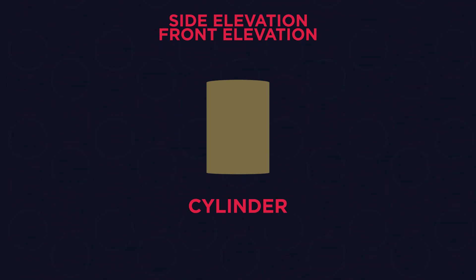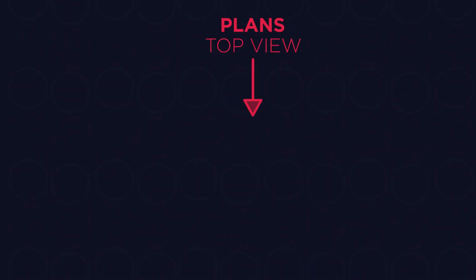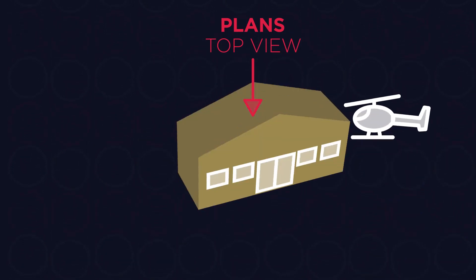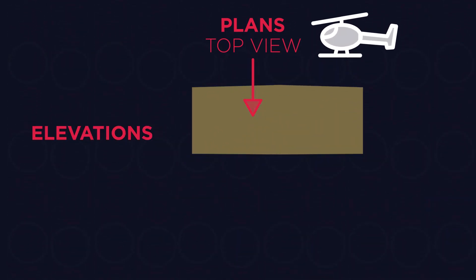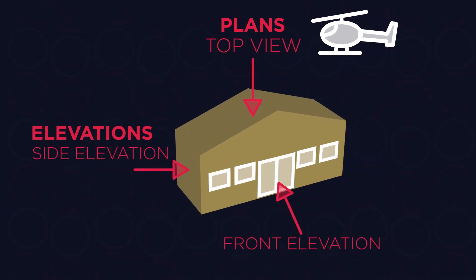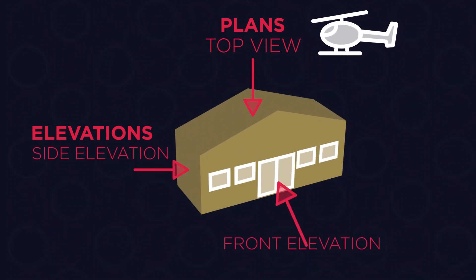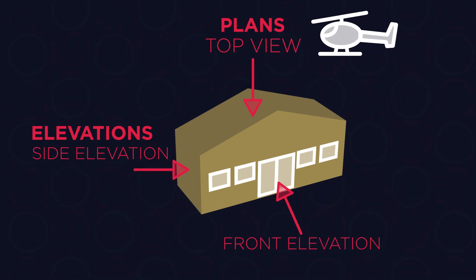To conclude, a plan is a shape's view from the top looking down — for example, the view you have of your school when you look down at it from a helicopter. While elevation is the view from the front and side — for example, when you're just about to walk inside your school, and when you view it from the side at break time.